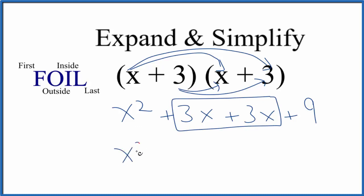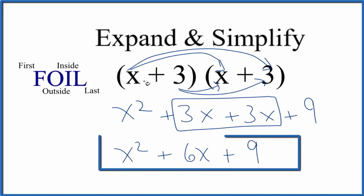up with x squared plus 6x plus 9. So when we expand and simplify x plus 3 squared, we end up with x squared plus 6x plus 9. This is Dr. B, and thanks for watching.